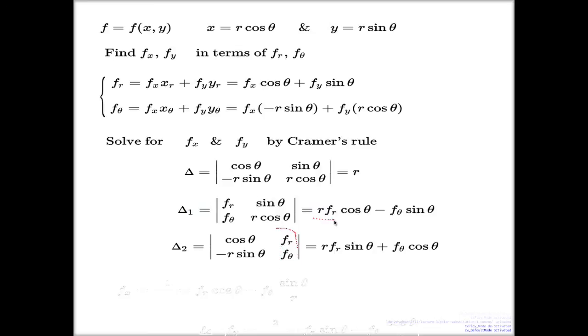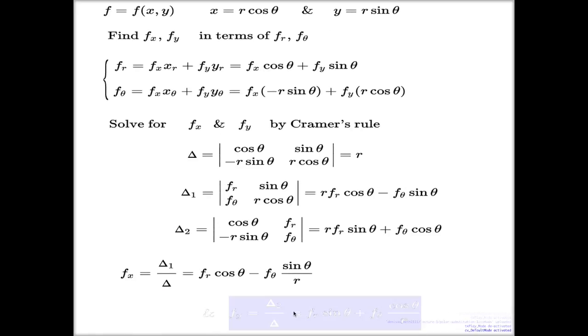The Cramer's rule says, Cramer's rule says, that the solution which we're looking for, fx and fy, is just equations of these two determinants, well, delta 1 by delta, and delta 2 by delta.